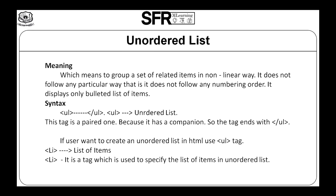Now let us see the meaning of Unordered List. Unordered List means to group a set of related items in a non-linear way. It does not follow any particular or numbering order. It displays only a bulleted list of items. Here is the syntax of Unordered List. UL denotes Unordered List. This tag is a paired one because it has a companion, so the tag ends with slash UL.